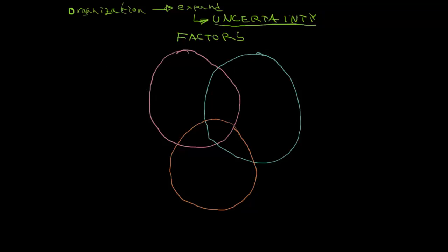There are going to be three most important factors. I will write down all three and then talk about them in more depth. The first is going to be the complexity of the environment — the complexity of the forces. The second one is going to be the dynamism, and the third one is going to be the richness — or how rich is the environment. These three words describe the forces within the environment, and all three cause uncertainty.